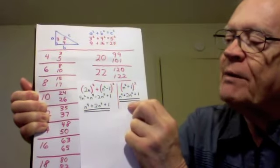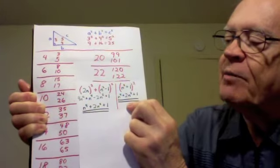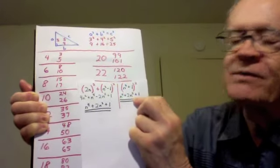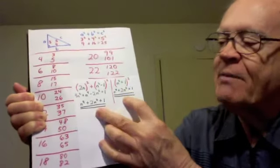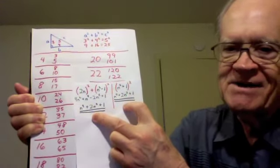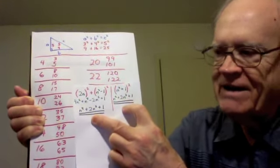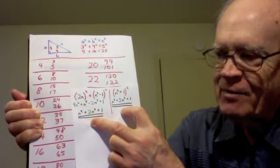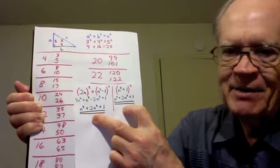On the right side, when we square n squared plus 1, we get n to the fourth power plus 2n squared plus 1. We have the same thing on both sides. So the left side equals the right side, and that means these three numbers satisfy the Pythagorean equation.